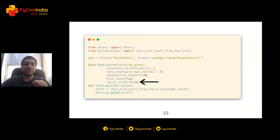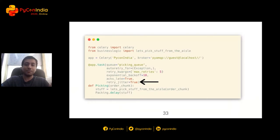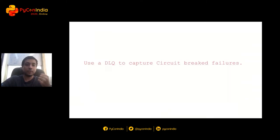The last argument is retry_jitter=True, which adds randomness to the system. In a concurrent system, two tasks might try to access the same database resource, form a deadlock, and fail. With automatic retries enabled, they'll get retried — but at the same time, forming a deadlock again and again until the circuit breaks. Retry jitter adds randomness to retries so they don't get retried simultaneously. If you want to keep track of circuit-break failures, you can use a DLQ — a dead letter queue — to store your failed tasks.